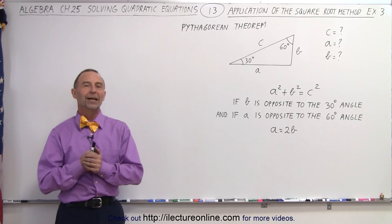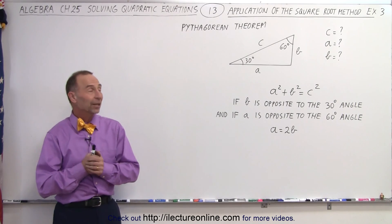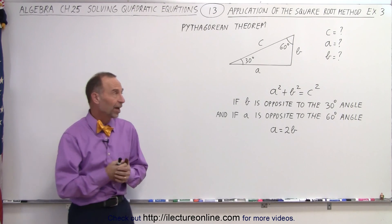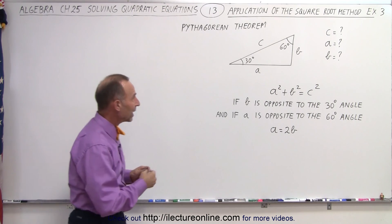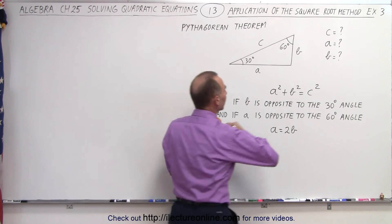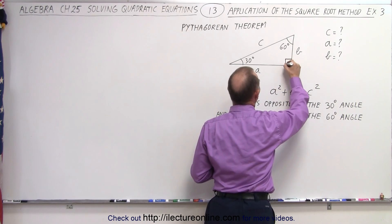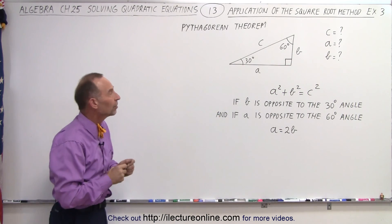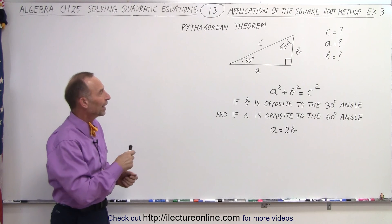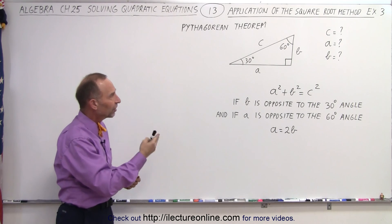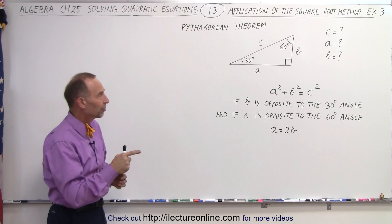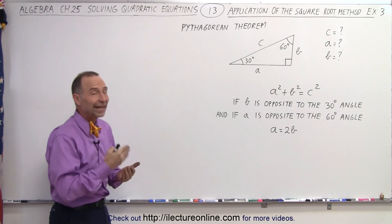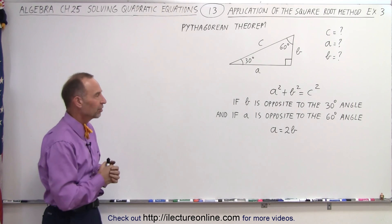Welcome to Electronline. Again, we're trying to find A, B, and C in terms of the other sides using the right-angled triangle. This is a right-angled triangle, but in this case one of the angles is 30 degrees and the other angle is 60 degrees. Notice that A is opposite to the 60-degree angle and B is opposite to the 30-degree angle, which means that A must therefore be twice as long as B.